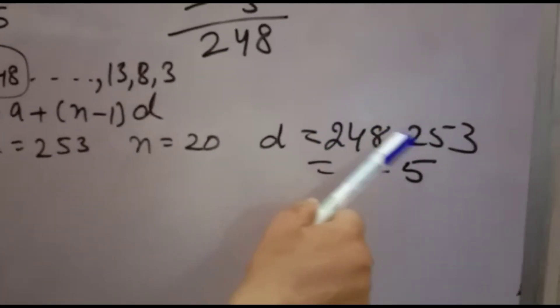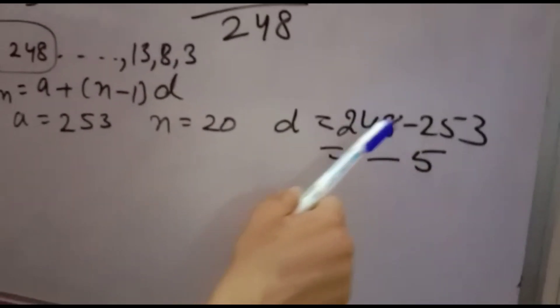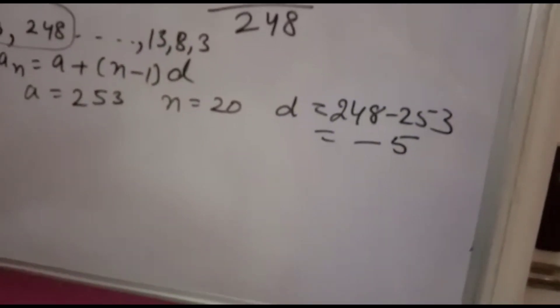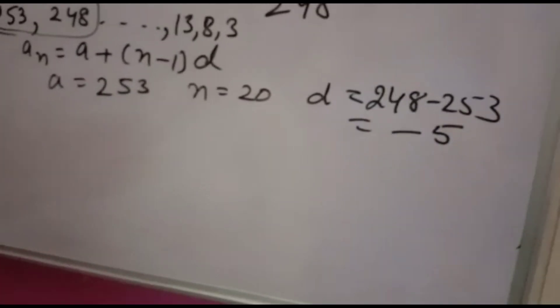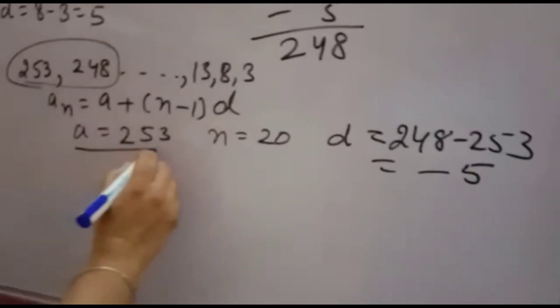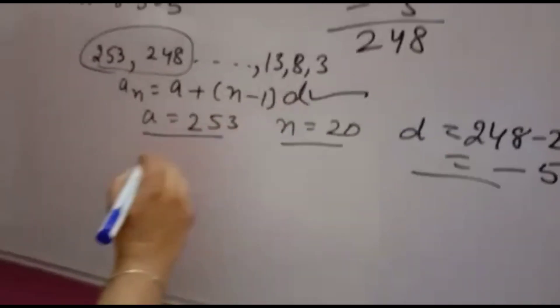Because 248 is after nothing, so this is in minus. You will subtract and sign of minus will come because that is 253, so sign will come of minus. Now you have to use these values in this formula.